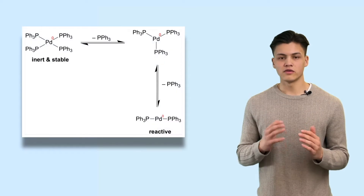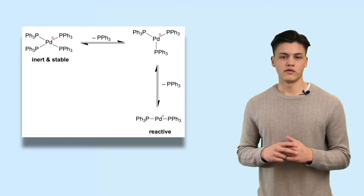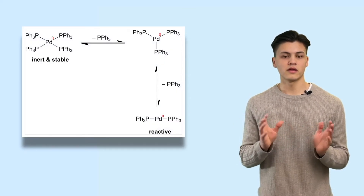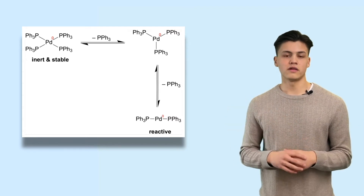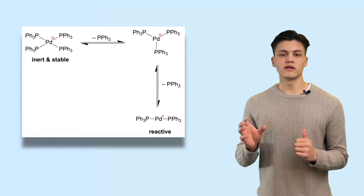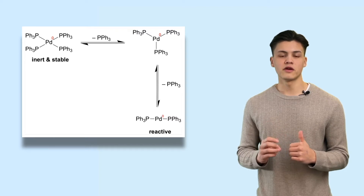If we want any catalytic activity from it, it has to dissociate at least two of its ligands. In an equilibrium, one after another will dissociate and we get a linear complex which is now very reactive because it has three bonding sites. As a palladium(0) system it is very electron-rich, so it can easily give away electrons by oxidation and go to a palladium(II) state — which is exactly what happens in the catalytic cycle as we change from oxidation state zero to two and back.